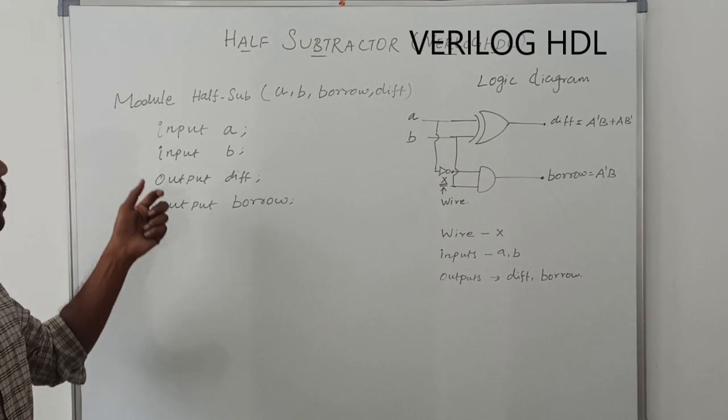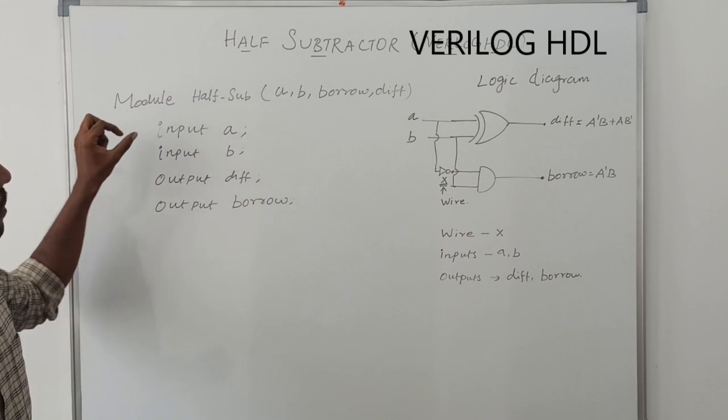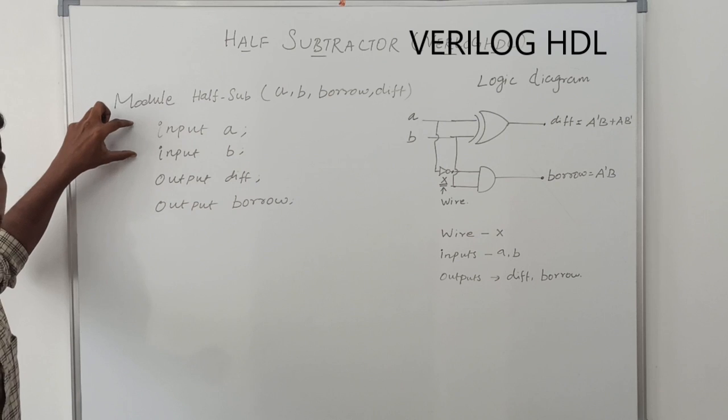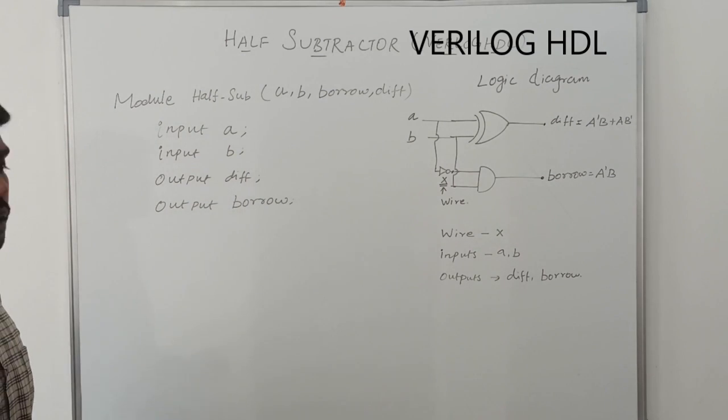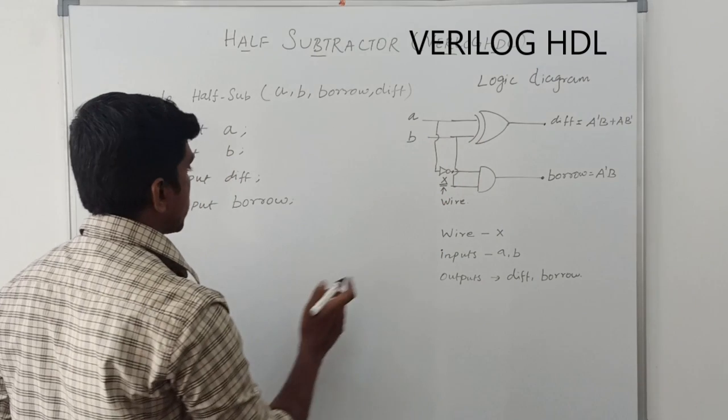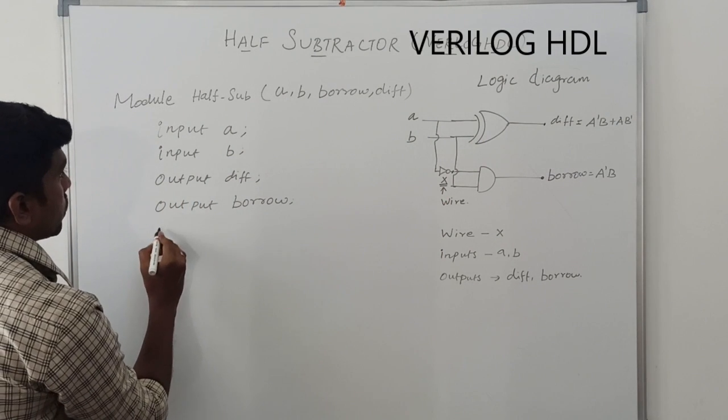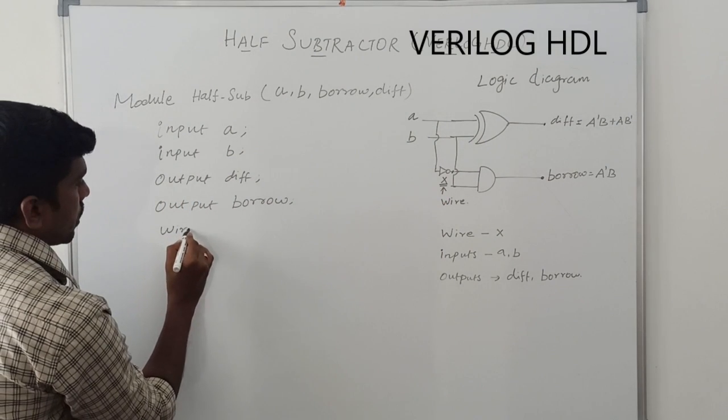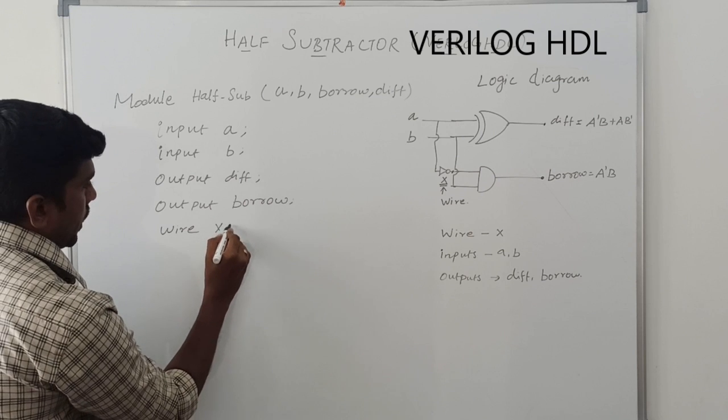Second output is borrow. So far, you declare the module and module name, which are the variables are used in input and which are the variables are used in output. Now, we directly go to the function. Then, one more thing. Wire X.